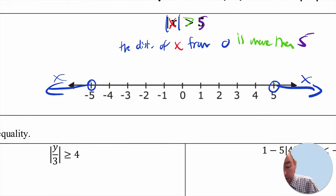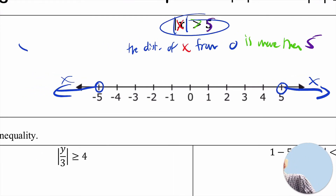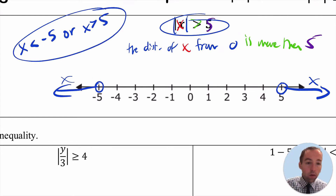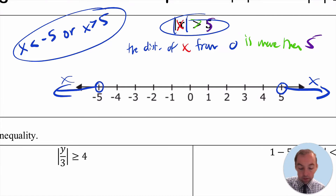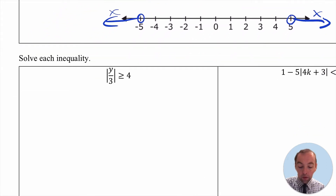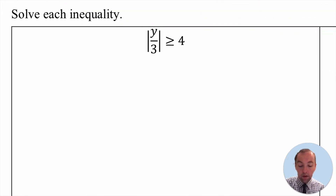This statement is equivalent to the compound inequality x is less than negative 5, or — not the word 'and' but the word 'or,' since we've got a disjunction — x is greater than 5. Conceptualizing and understanding the meaning of this is really going to help us understand how we go about finding the possible values of the variable.